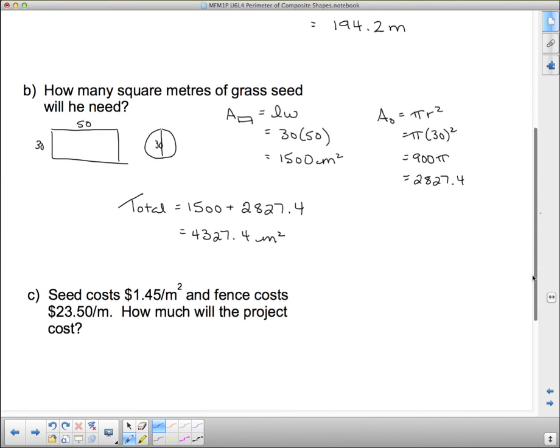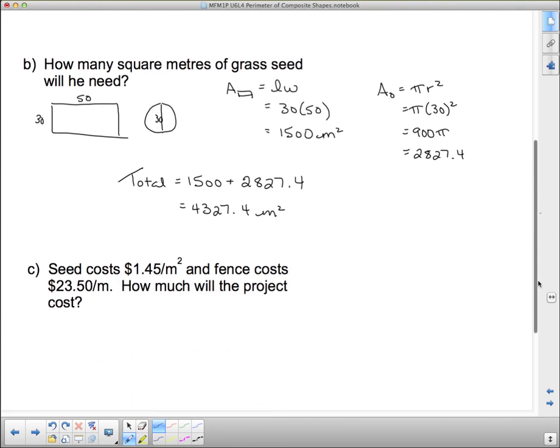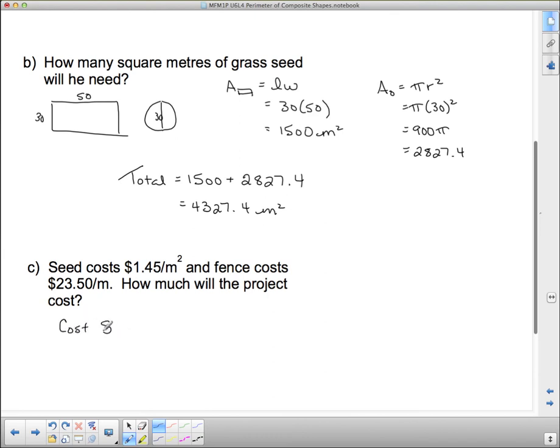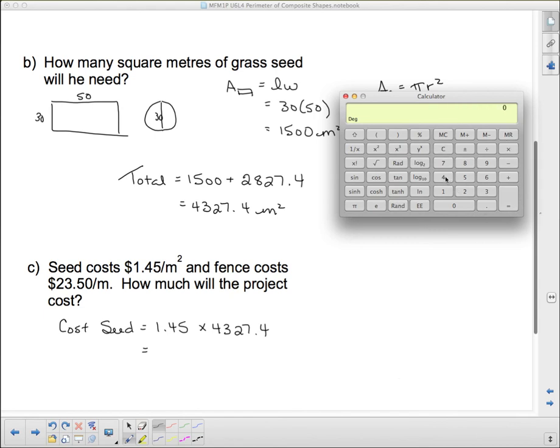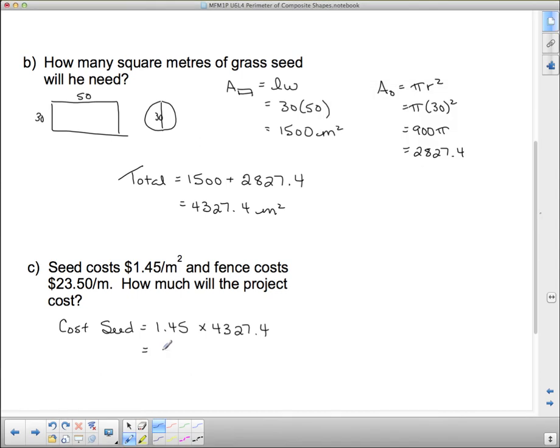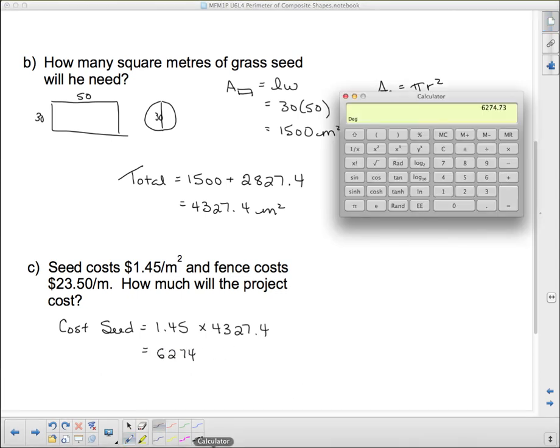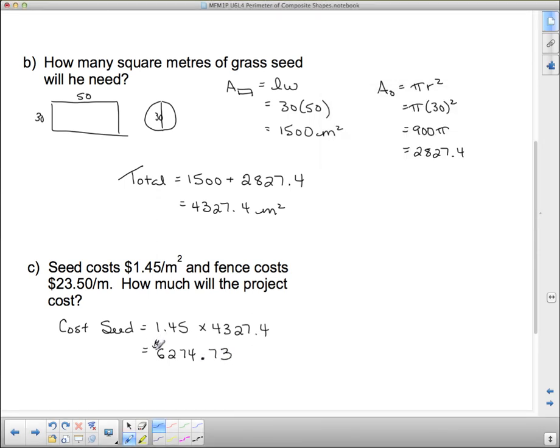Okay, now let's see what this says. Seed costs $1.45 per square meter, and fence costs $23.50 per meter. So how much will the project cost? So the cost of seed. The cost of seed is $1.45 for every square meter, and since we have 4,000 of them, we're going to have to multiply that by 4,327.4. So that's a lot of seed. Let's take that. I'm going to clear that out so that we don't have all those digits. So it's 4,327.4 times 1.45 is $6,274 and 73 cents. That's the cost of seed.